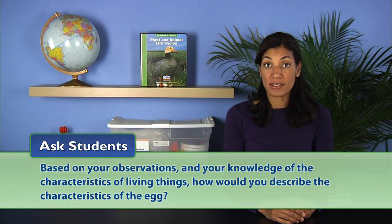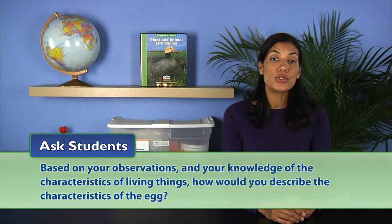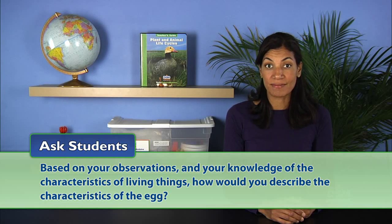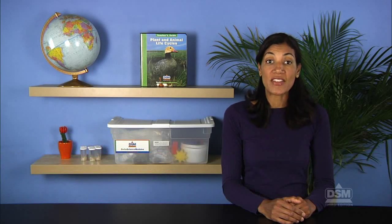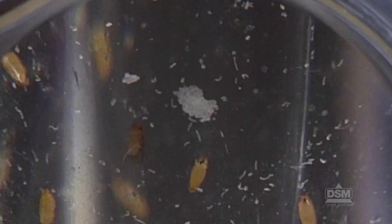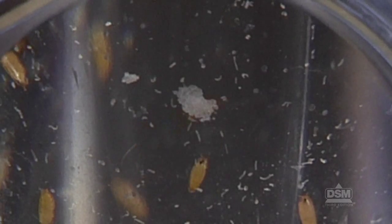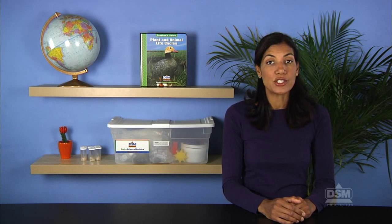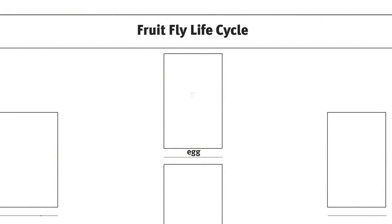Ask students: based on your observations and your knowledge of the characteristics of living things, how would you describe the characteristics of the egg? Students should respond that the egg is very tiny and does not move. Then have a volunteer identify the picture of the fruit fly egg from the collection of pictures at the front of the classroom and tape the picture in box one on the chart.